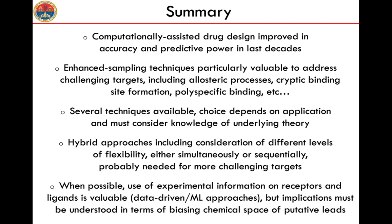Summarizing the two lectures, the take-home messages are several. I hope I convinced you that computationally assisted drug design has improved in accuracy and predictive power over the last three decades. Enhanced sampling techniques are particularly good for addressing challenging targets including allosteric processes, detection of cryptic binding sites — binding sites that generally do not occur on the protein and appear only in particular situations — and also in the case of poly-specific binding, such as in some transporters found in bacteria and humans. You have many techniques available and the choice depends on the application. You have to find the most suitable one, and this is almost always the most difficult choice. You must consider the underlying theory of the method you would like to use. For the most difficult targets, hybrid approaches can be a solution, combining flexibility at different levels by using different algorithms sequentially or simultaneously.